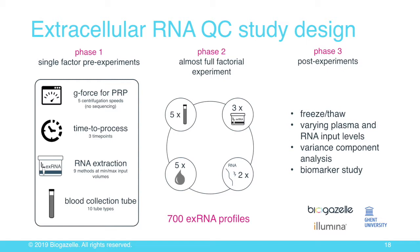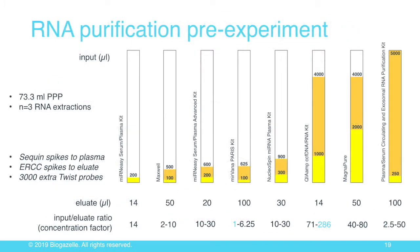Switching gears: the extracellular RNA quality control study, again using these 3,000 Twist probes to capture the spike-in RNAs. It's a very large study consisting of three phases. Phase one documents the impact of single pre-analytical variables; phase two is an almost full-factorial design combining different pre-analytical variables; and phase three involves variance component analysis and a real biomarker study. We have finished phase one — it's already two years in and involves 30 collaborating groups.